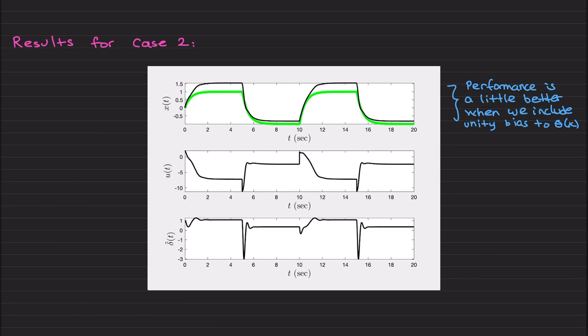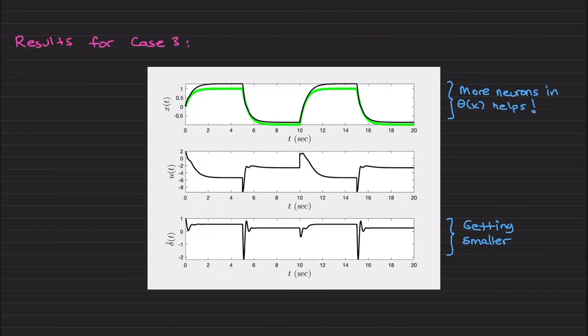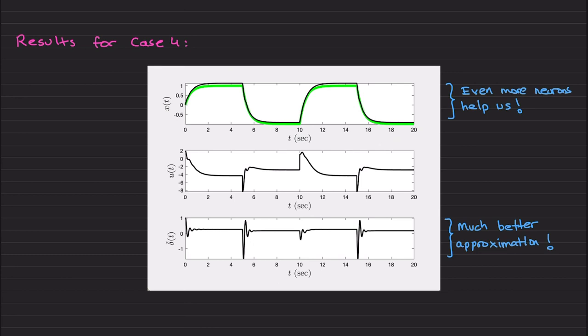Now, with the knowledge we gained from universal approximation theorem, we are going to increase more neurons in cases three and four while keeping the bias term. So we expect theoretically to achieve better performance, and we indeed achieve a better performance here. Results for case three: as you see, this delta tilde is getting closer to zero, this approximation is getting better, the neural network approximation. And you see we are more closely tracking now. We still have a gap, but we more closely track the reference model states.